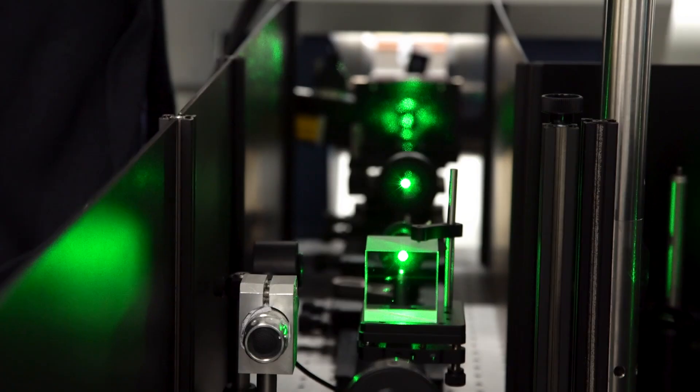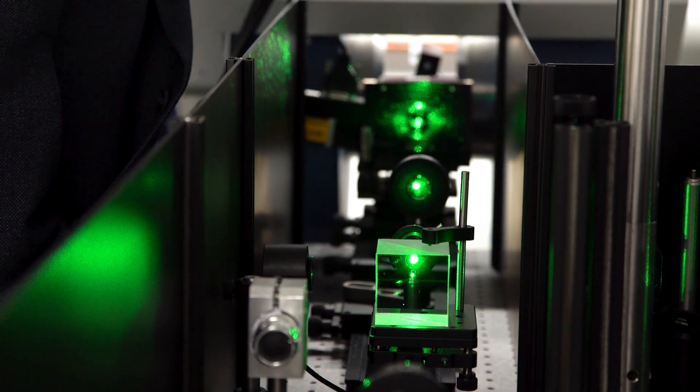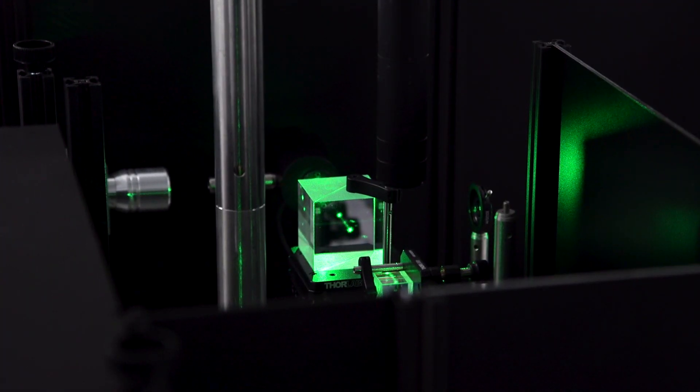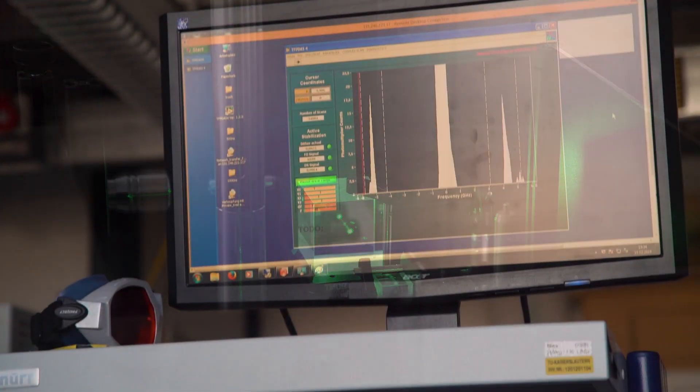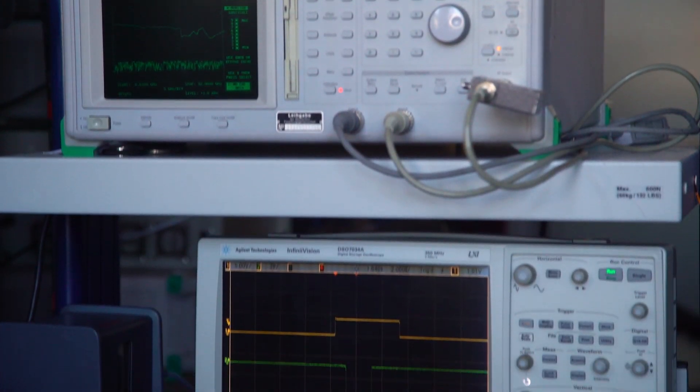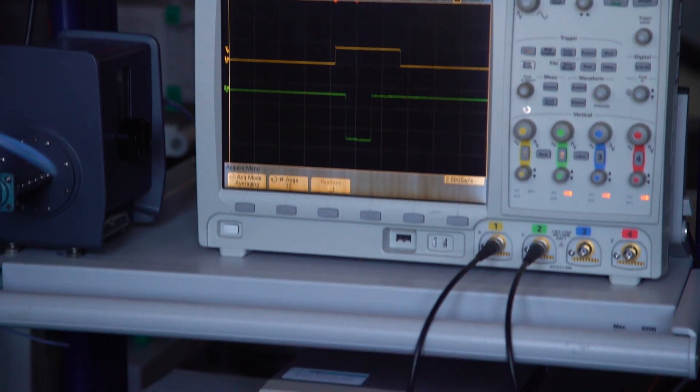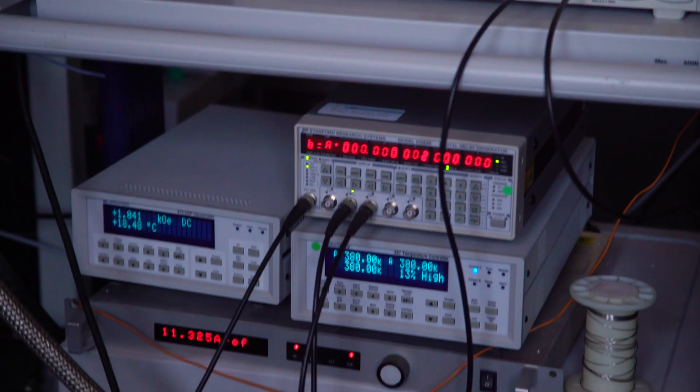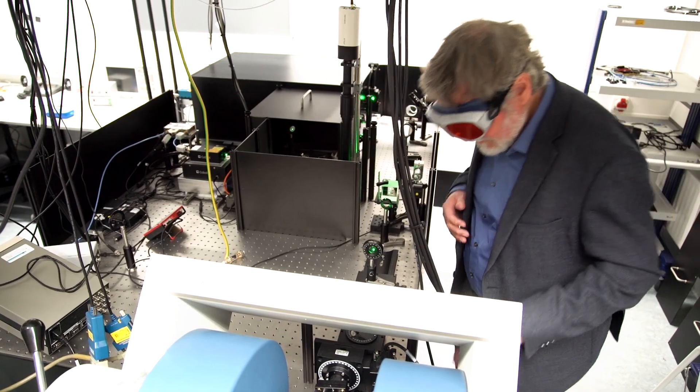This is called Brillouin light scattering spectroscopy. This is laser light which we use. Laser light is scattered from these magnons, and then we need a fairly complicated technology to detect this scattered light and to infer the magnon properties from this scattered light. And these are the machines which you can see in my laboratory.